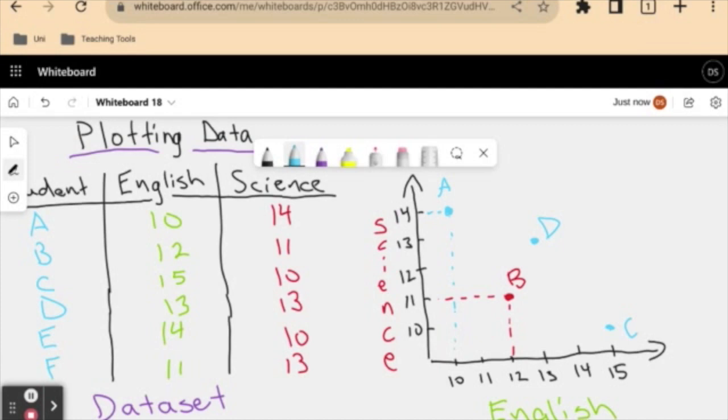Student E, we also had student E with a 14 in English and a 10 in science. And finally, student F with an 11 in English and a 13 in science. Let's split that up a bit more. Okay, and we have student F.